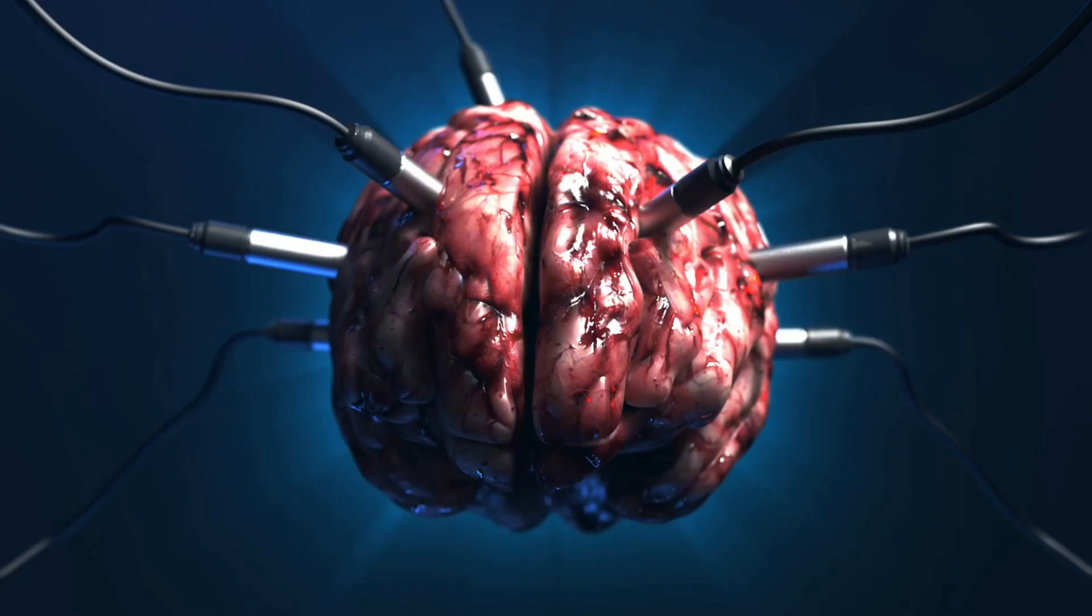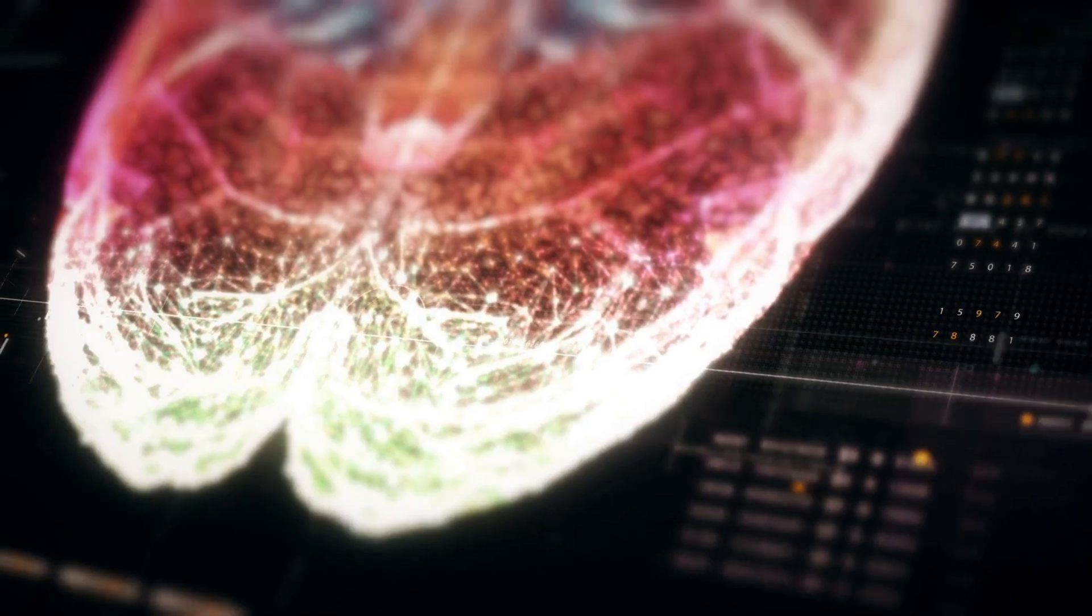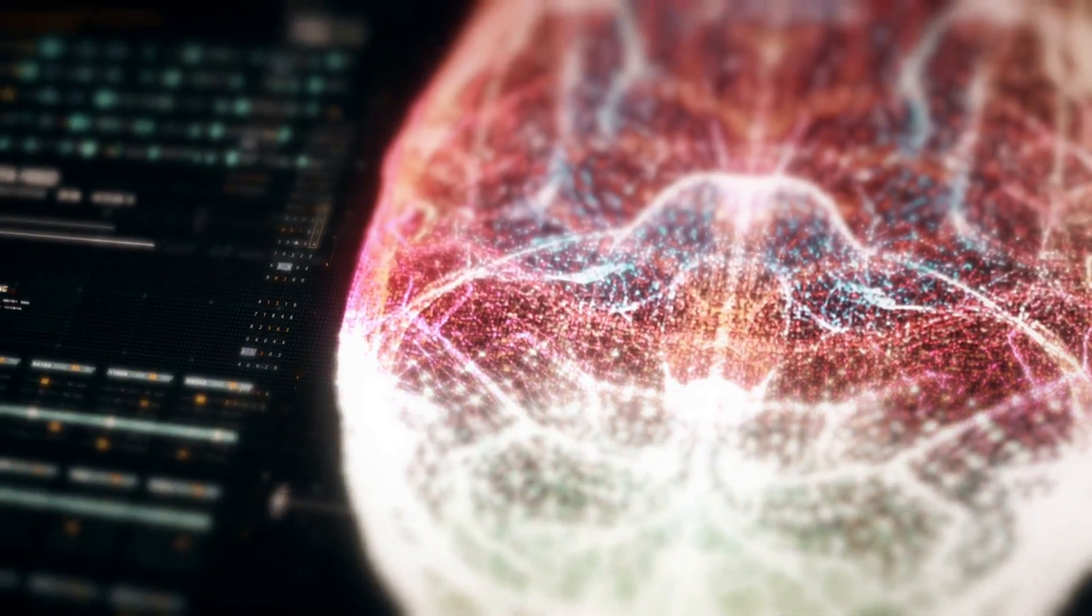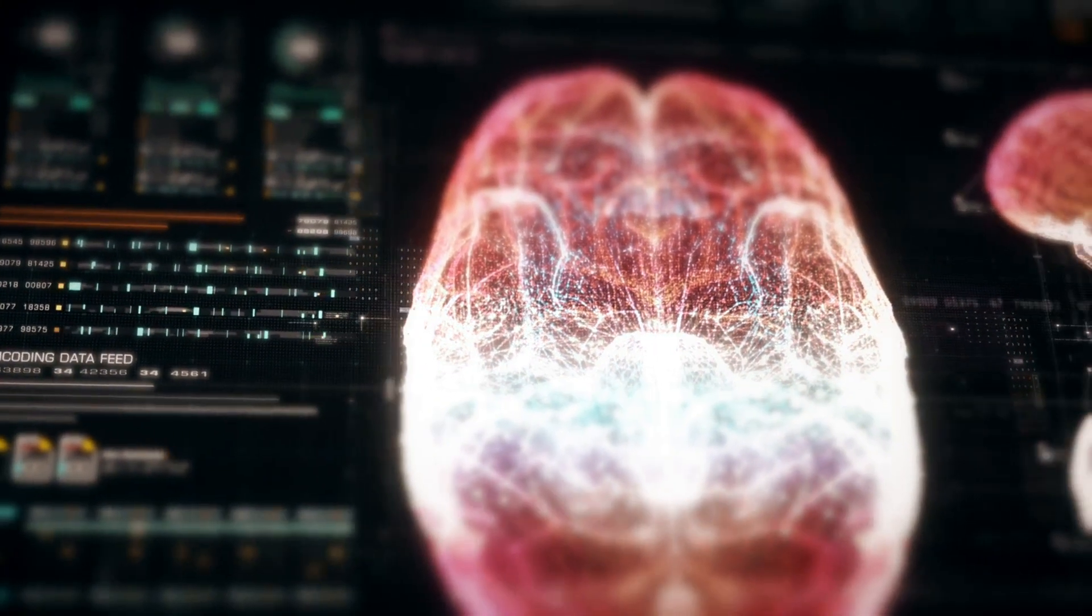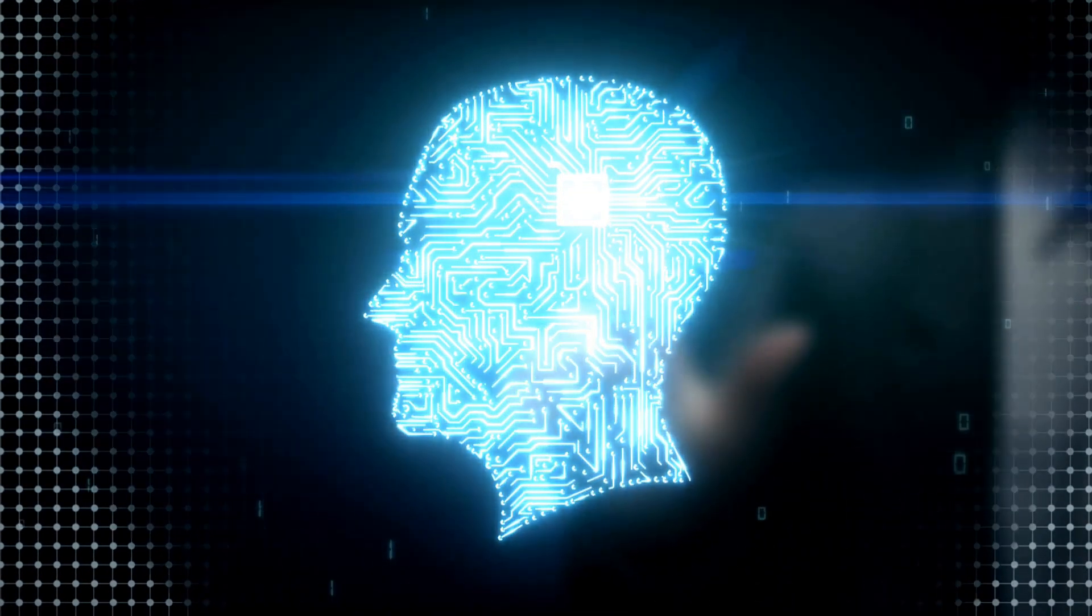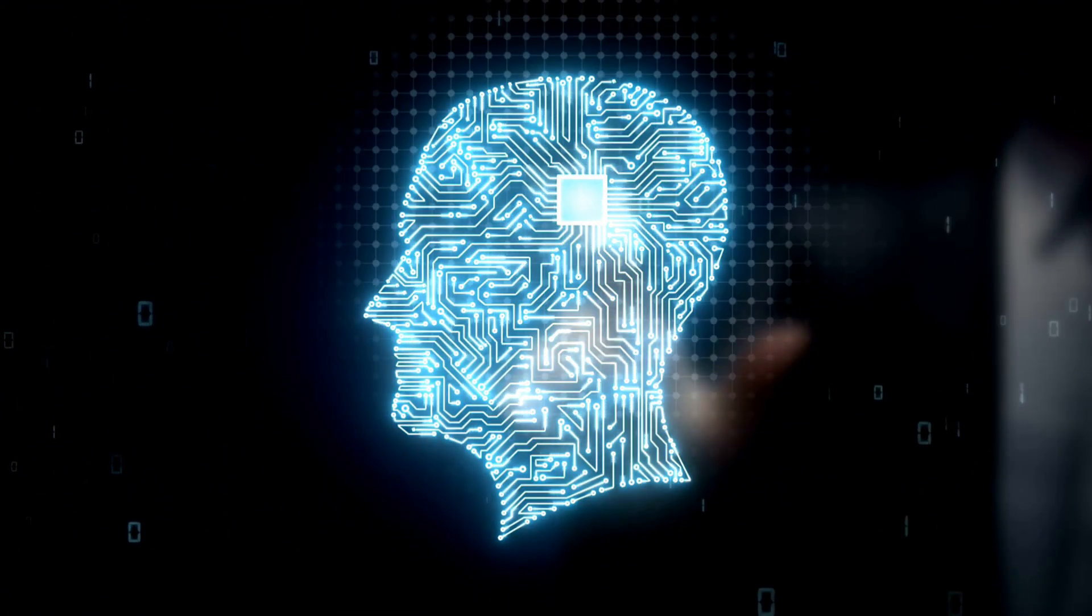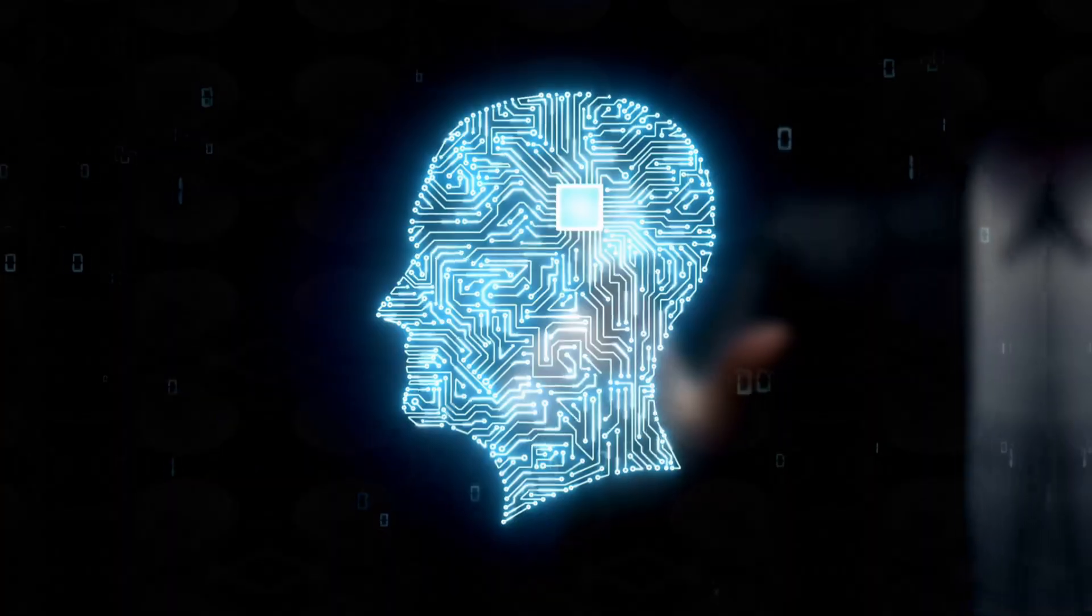Now, Neuralink is taking BCI technology a step further. They're not just looking to translate the brain's language, they're looking to refine it, to make it more precise, more nuanced, and more powerful. Their N1 implant, for example, doesn't just pick up signals from a few hundred neurons, it picks up signals from over a thousand. This allows for a much more detailed picture of what's going on in the brain, which in turn allows for more intricate commands to be sent to external devices.